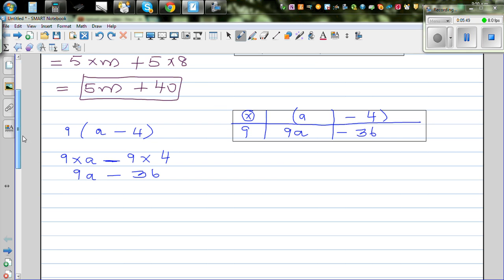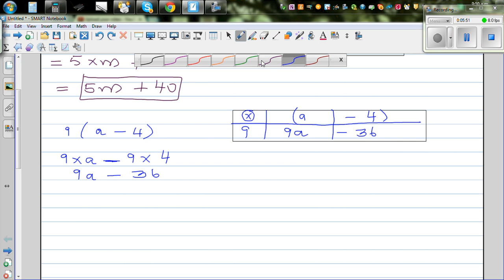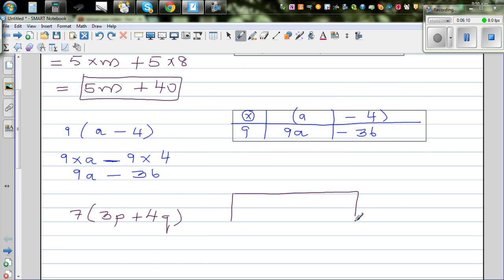One more example. What happens if it is, say, 7 bracket 3p plus 4q? Same process, no different. You make a grid or make a rectangle.